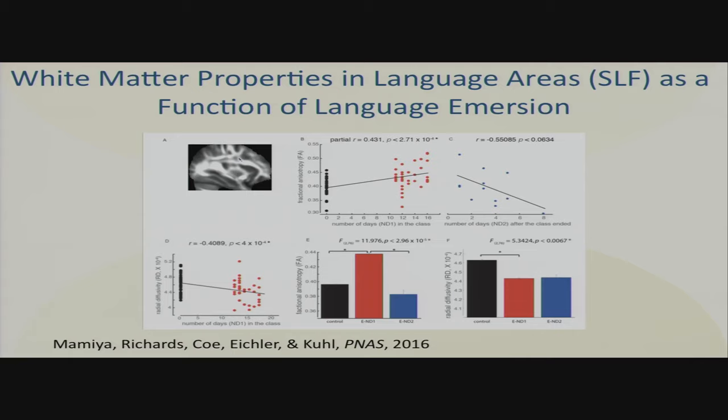The COMT gene influences this relationship. There are three variants: MET-METs don't change at all, while MET-VALs and VAL-VALs show this pattern of change over time. It's a very intriguing finding — we're collaborating with Evan Eichler and postdoc Pym Mamia, seeing what we can learn about how genetics influences brains in the service of learning.